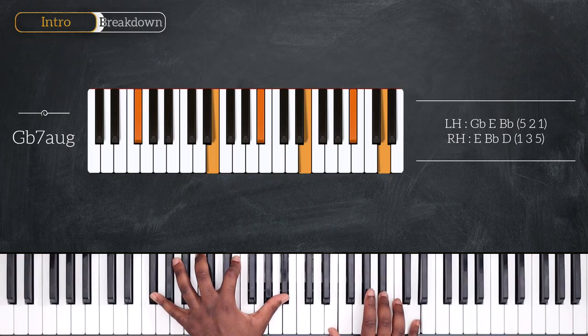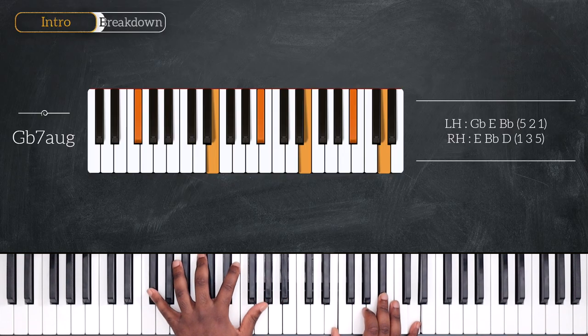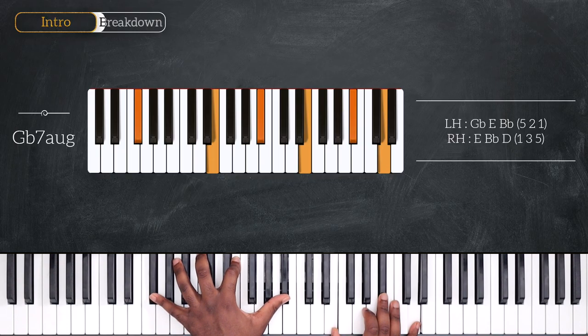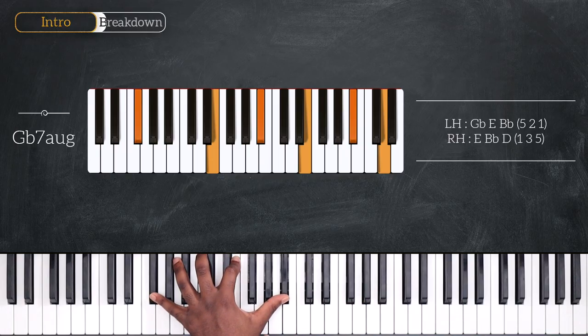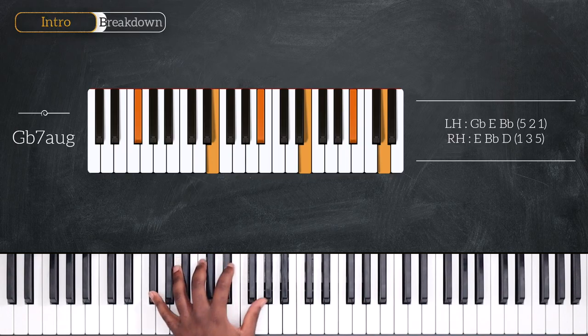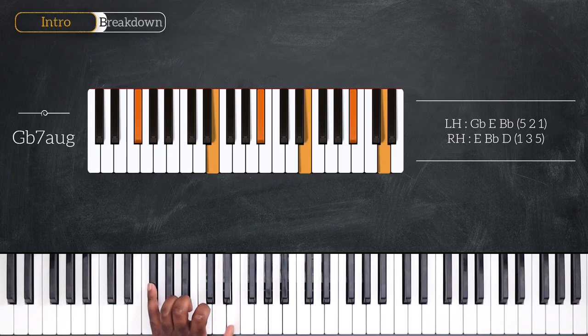Next, we're playing Gb7 augmented. Gb, E, Bb on the left with E, Bb, and D. We have again a pretty large voicing on the left, so instead you can simply use Gb and E.